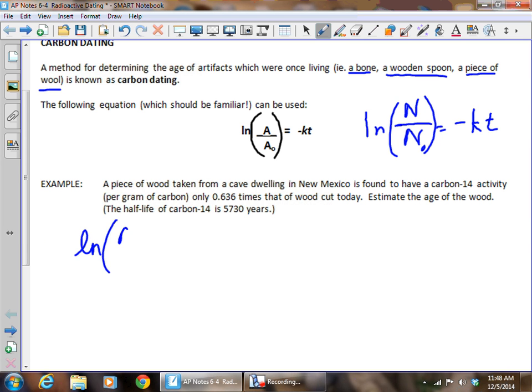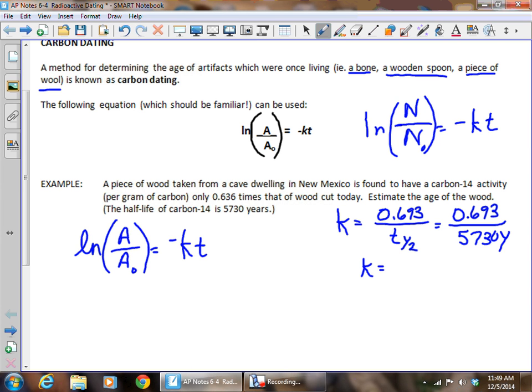So we can use the equation ln of A over A0, because it's talking about activity, equals negative kt. The k value, we're going to have to get the decay constant by using our equation that k is equal to 0.693 over the half-life, which it very nicely gave us of 5,730 years. So we end up with a decay constant of 1.21 times 10 to the negative fourth of reciprocal years.